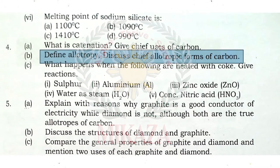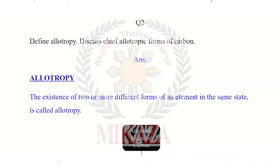The next question is: define allotropy and discuss the chief allotropic forms of carbon. The existence of two or more different forms of an element in the same state is called allotropy. If an element is physically available in different forms, those different forms are known as allotropes.